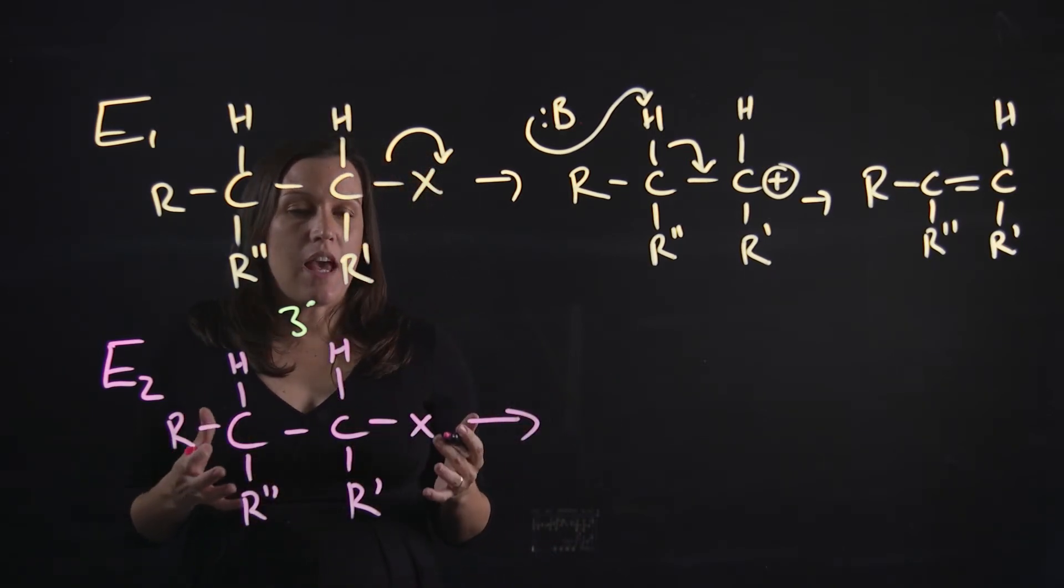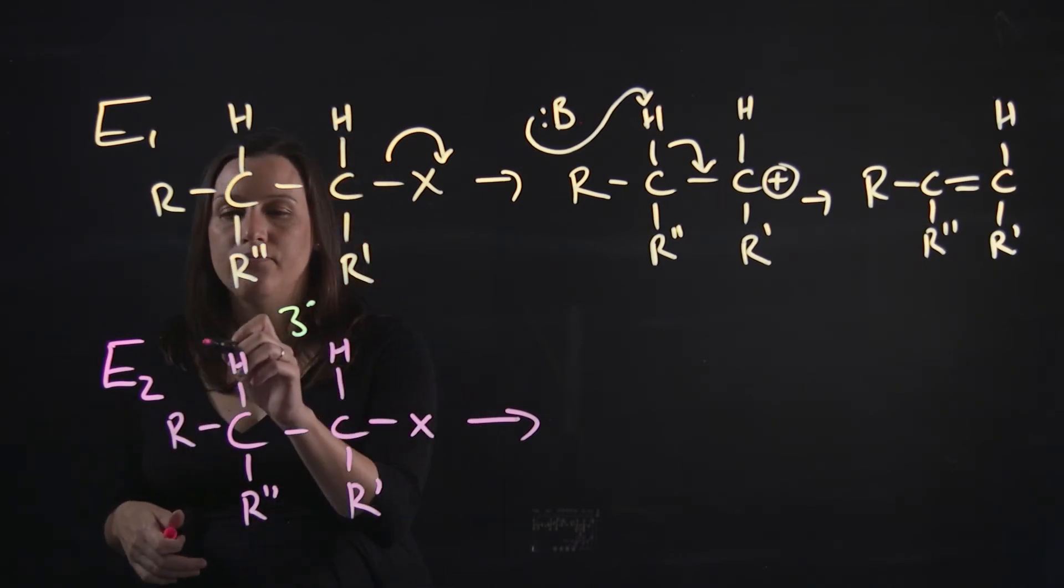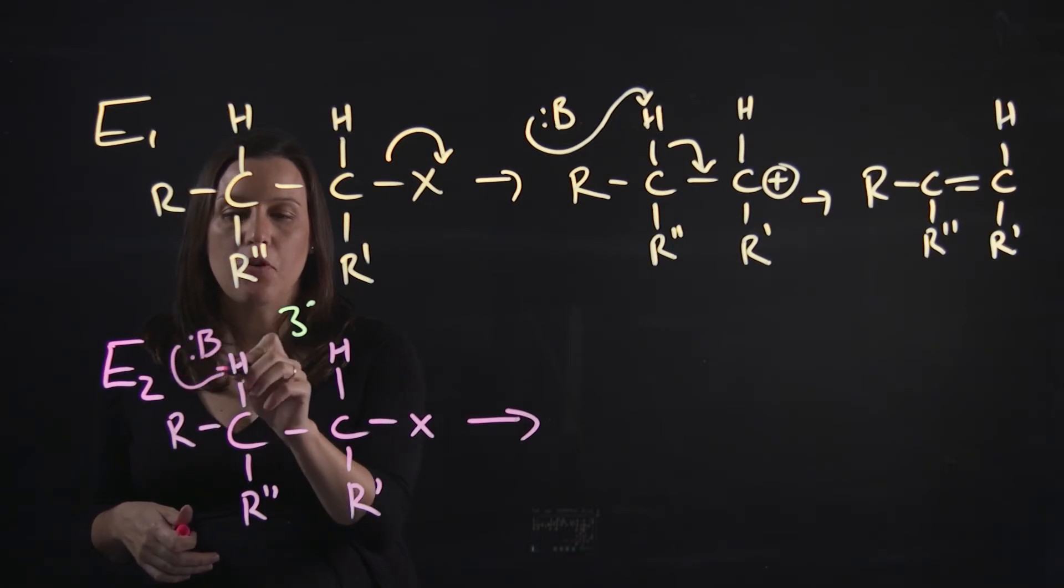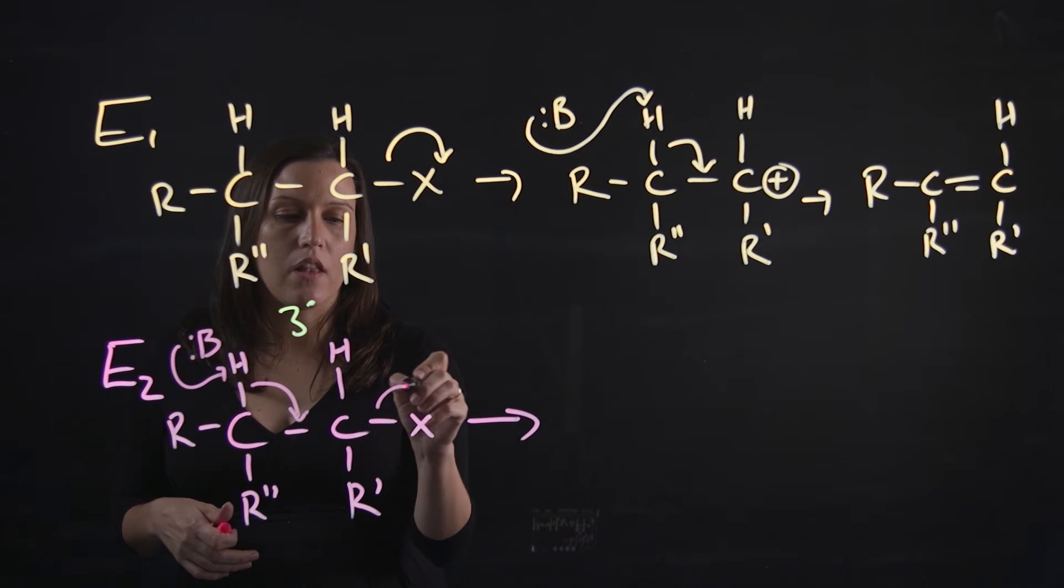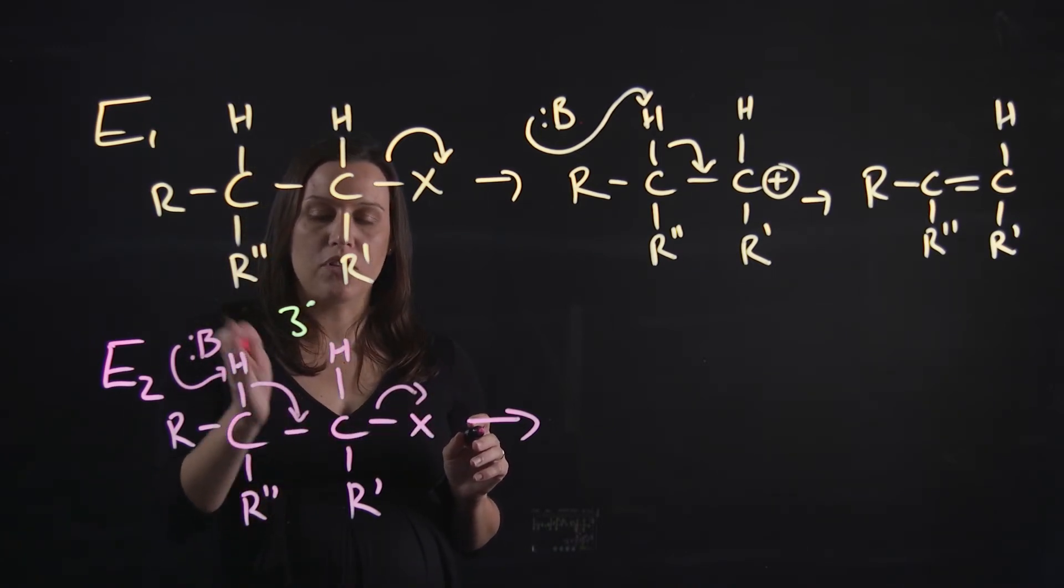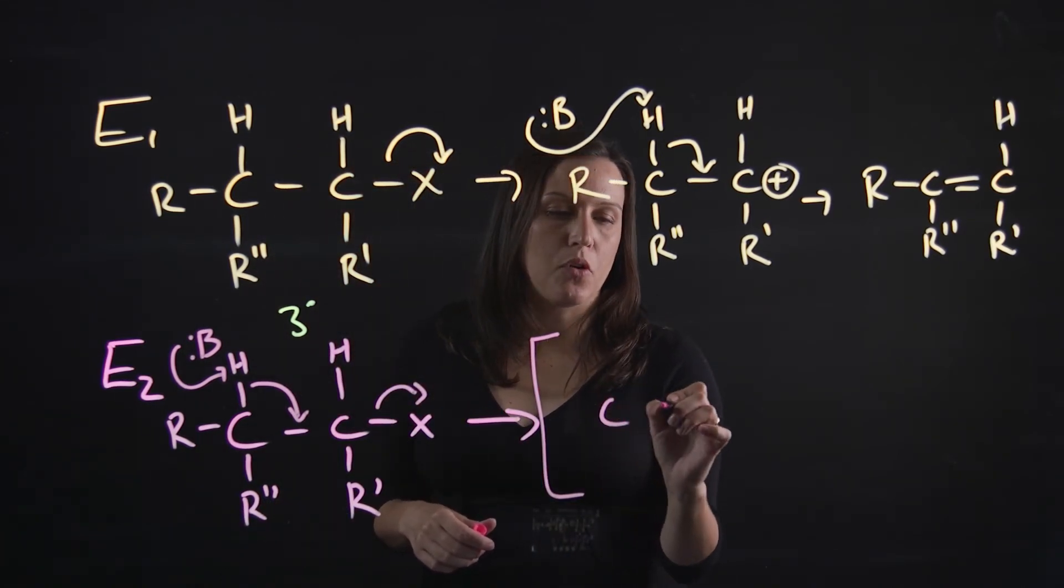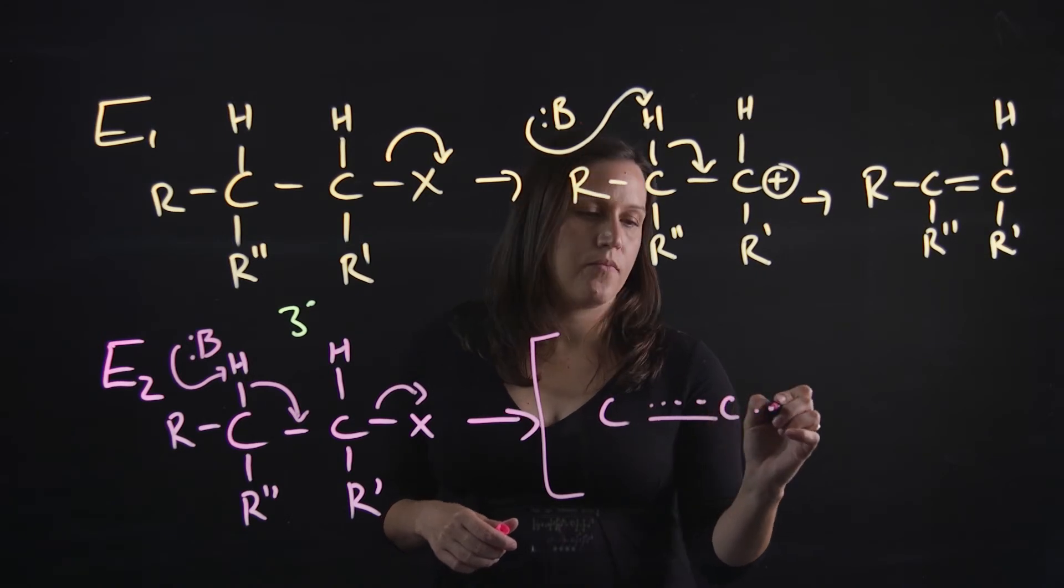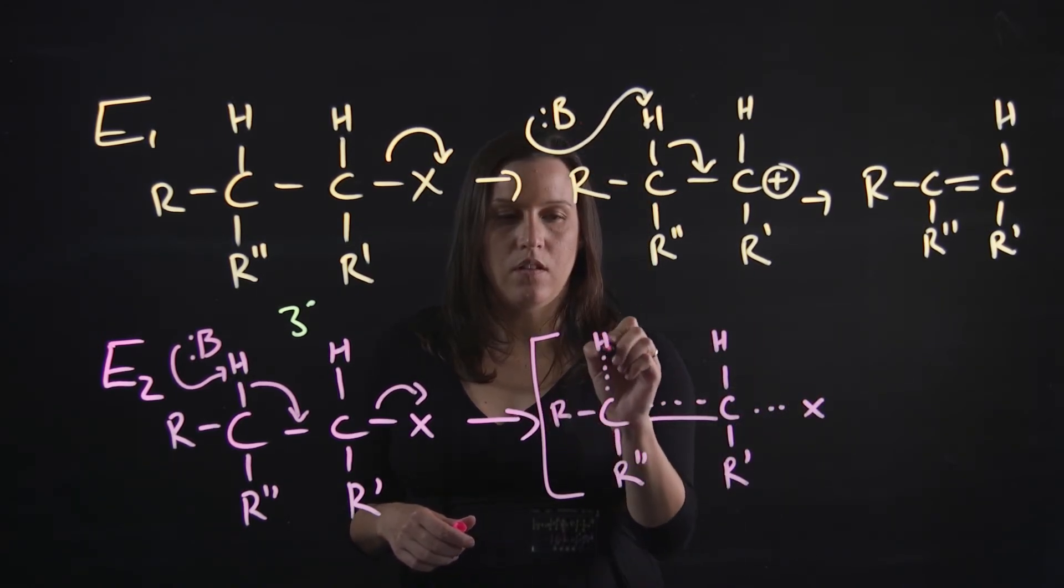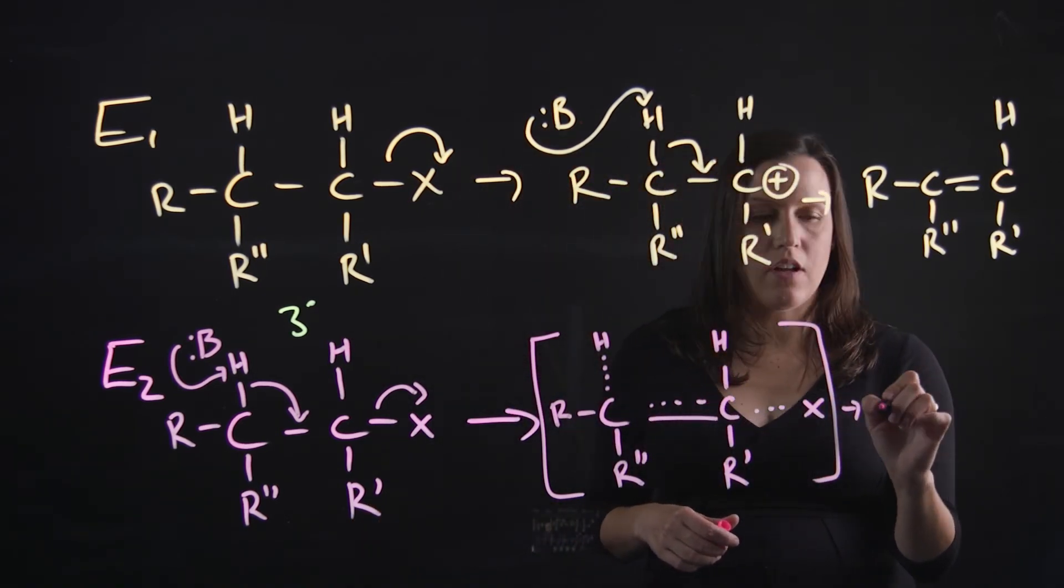The first thing that happens with this one is we have the deprotonation from the strong bulky base. So it deprotonates, and then we have the leaving group leaving at the same time as that hydrogen bond is being removed. So we have that transition state where we have the partial bonds. Remember the dotted line of those bonds breaking and forming, and then we'll get our product out.